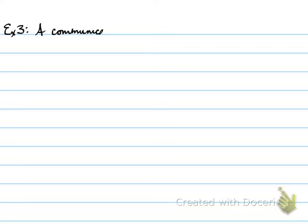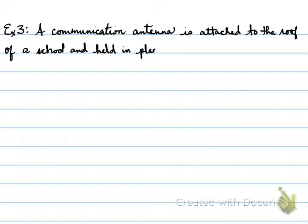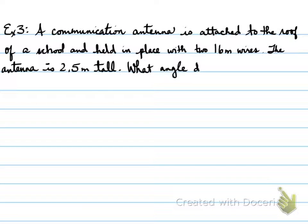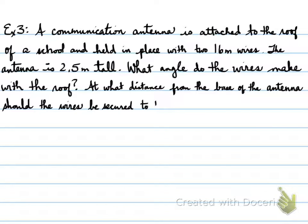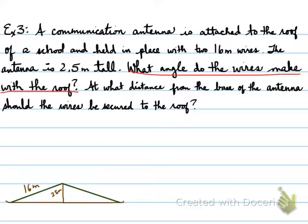Example three. A communication antenna is attached to the roof of a school and held in place with two 16-meter wires. The antenna is 2.5 meters tall. What angle do the wires make with the roof? And the second part is at what distance from the base of the antenna should the wires be secured to the roof? So there's two parts to this question. We need to have a drawing, and we're going to represent the first part.